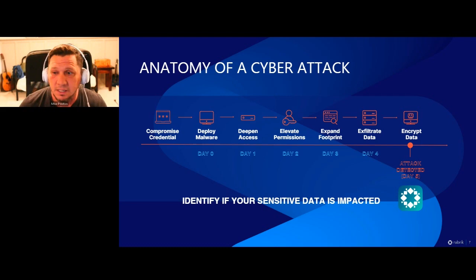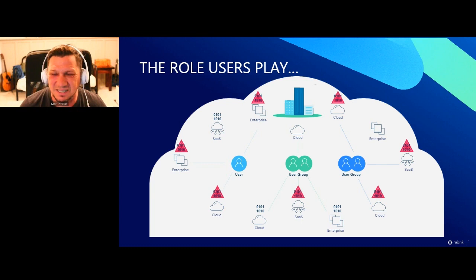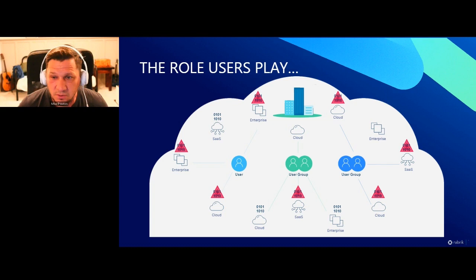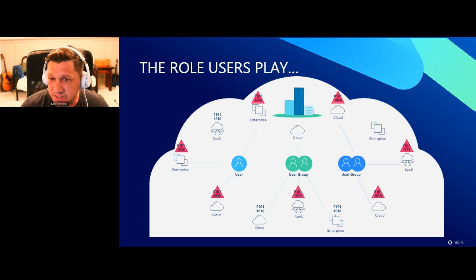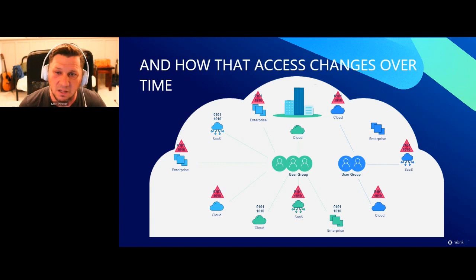To do that, we started thinking about the role users play in your environment. Any IT admin knows — I was one for 20 years — users are the weakest link. End users are why attacks often involve compromised credentials. Users are the ones we provide all this data for; they're sitting in directory services groups accessing data all over the place and have a need to access sensitive data. As they grow with the organization, they get moved around to different groups, automation runs in the back end, and next thing you know a user ends up in a new group with access to a slew of new types of data — and sometimes that's not the desired result.